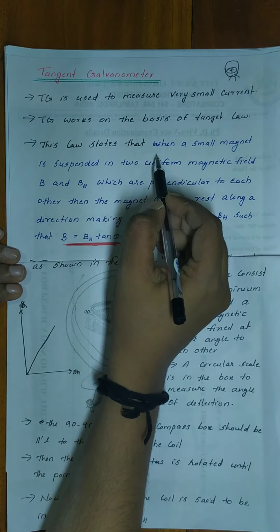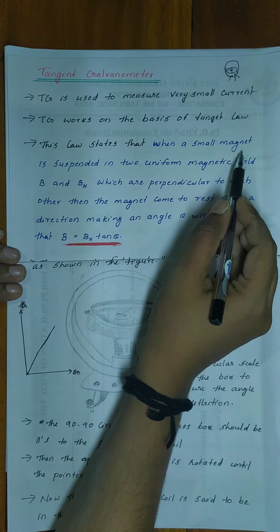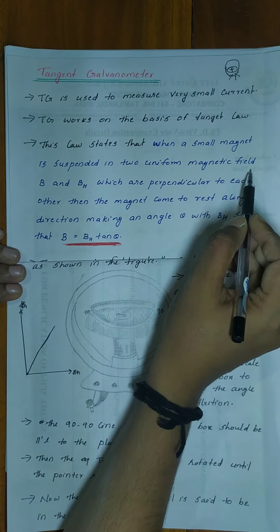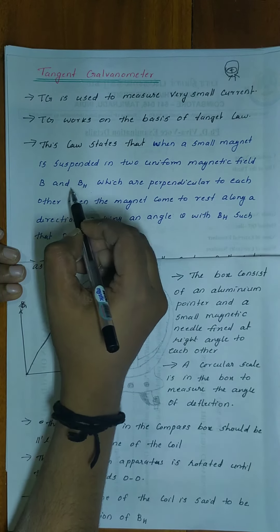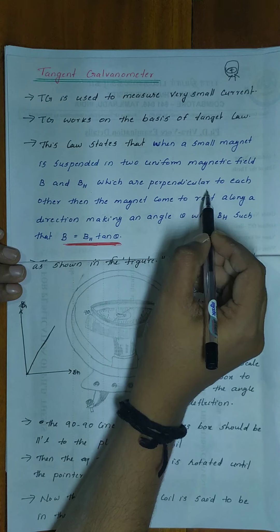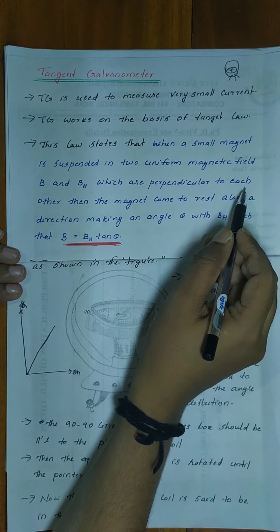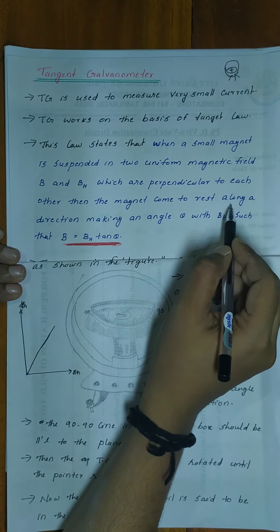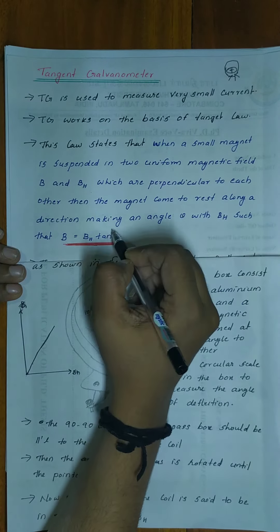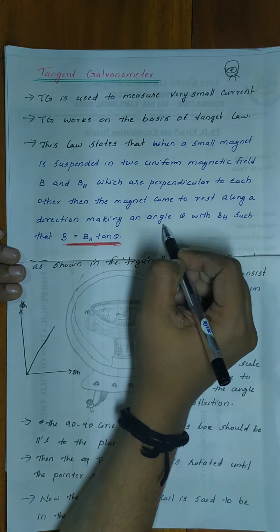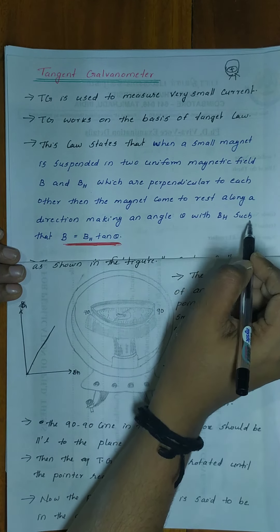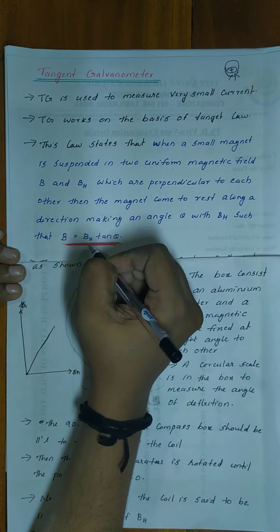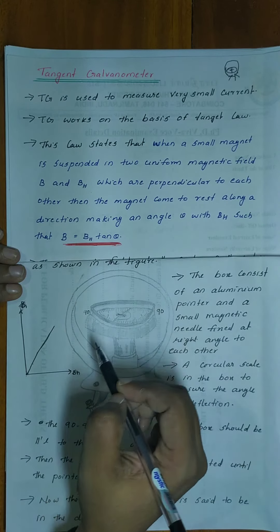The tangent law states that when a small magnet is suspended in a uniform magnetic field B and BH which are perpendicular to each other, the magnet comes to rest along a direction making an angle theta with BH such that B is equal to BH tan theta.